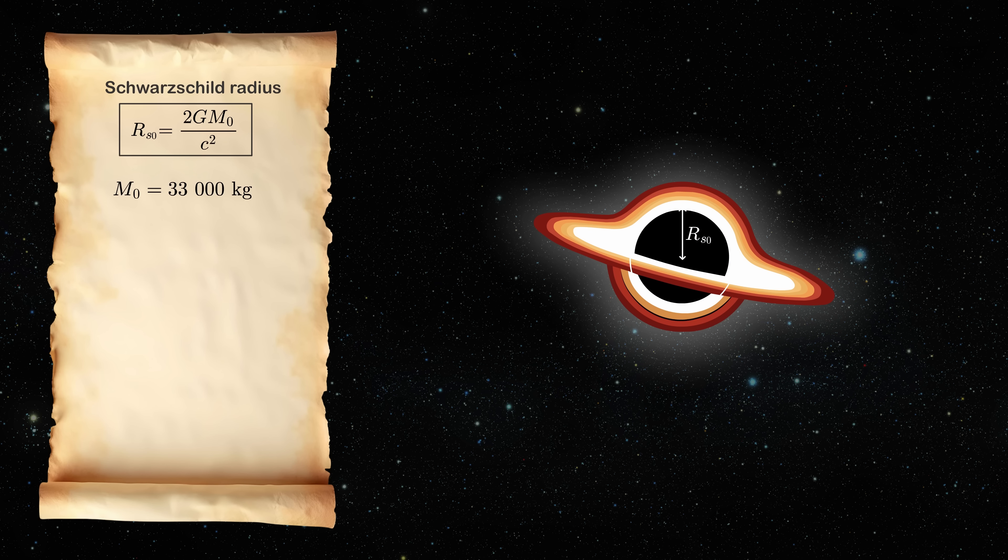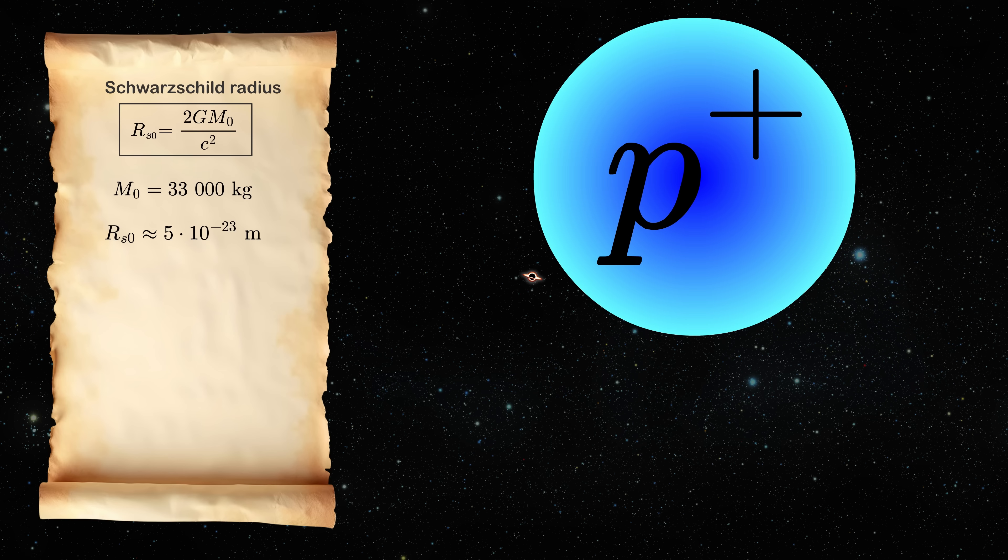So if you have a ball with a mass of 33 metric tons, its Schwarzschild radius is around 5 times 10 to the minus 23 meters. To put this into perspective, a proton has a size around 10 to the minus 15 meters. So the black hole would be still around 100 million times smaller.